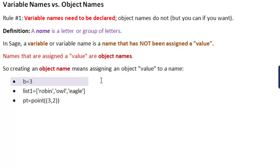Let's see some examples. B equals three. List one equals in brackets and then in quotations Robin, Owl, and Eagle. And our third example is PT equals point of three two. So B, list one, and PT are object names. They've been assigned a value.